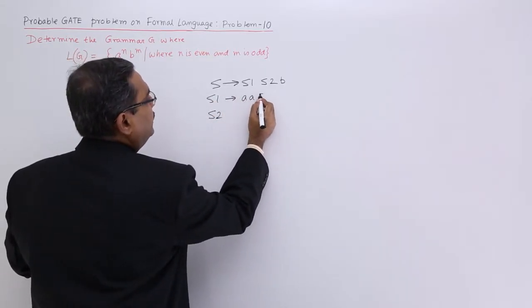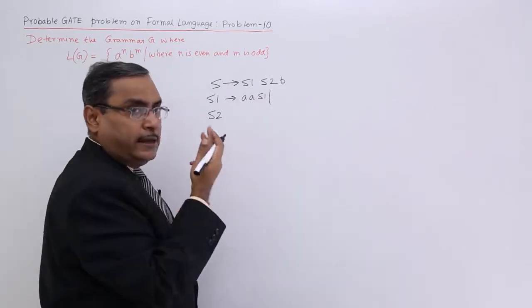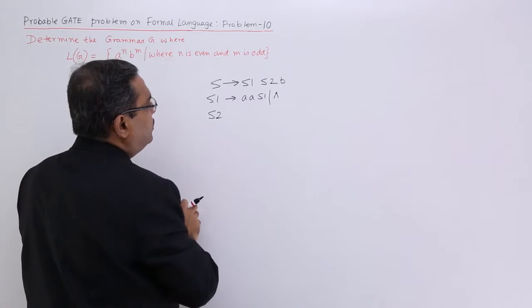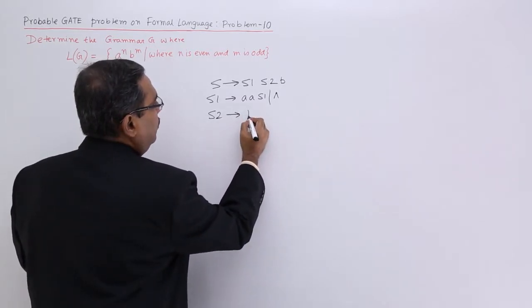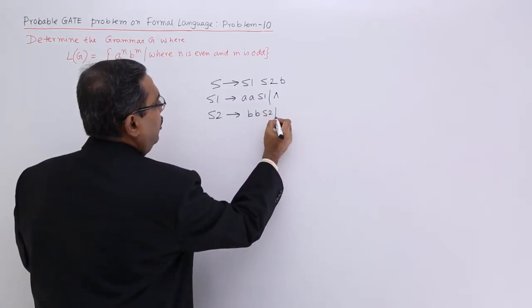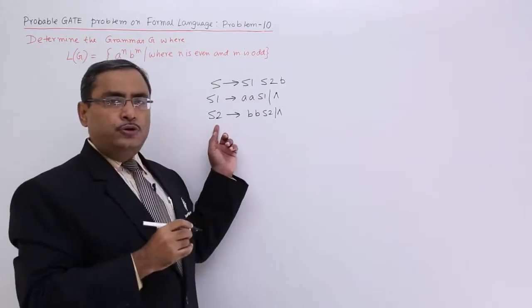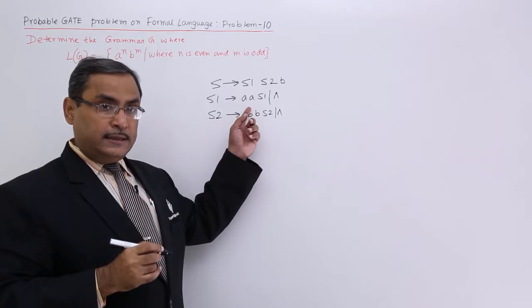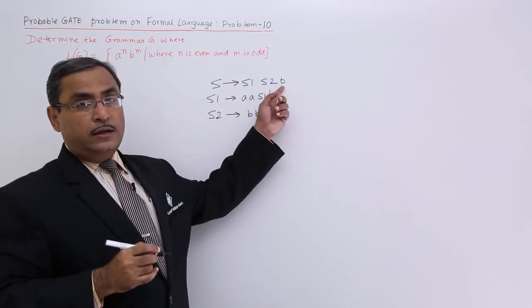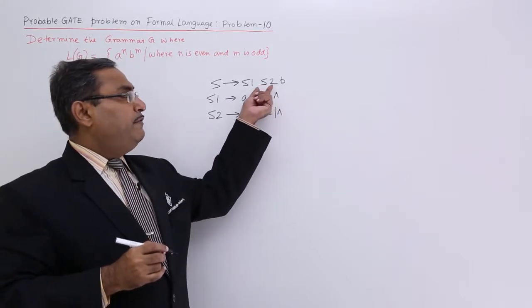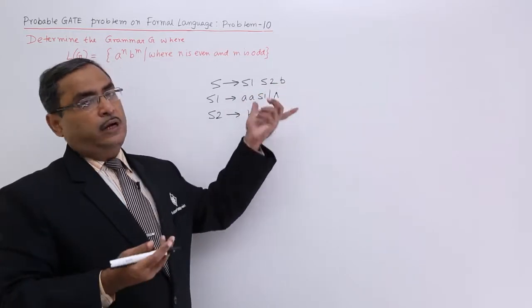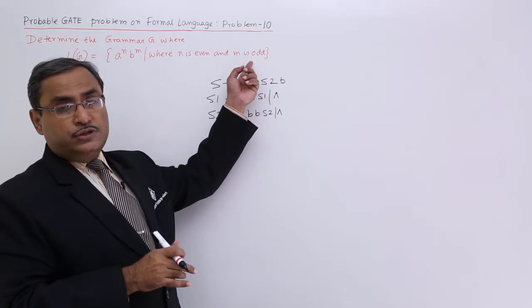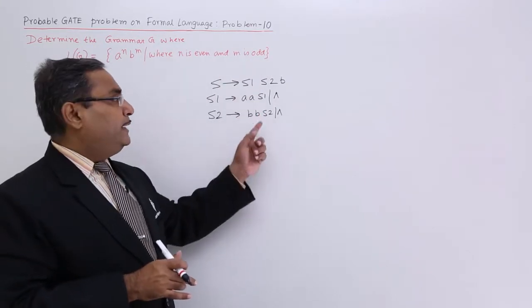S1 will be producing always 2 times a or kappa, and S2 can produce always 2 times b or kappa. So S2 will produce always even number of b's. S1 will produce always even number of a's. But 1 b is here extra. So if you go on concatenating even number of b's and 1 b, ultimately we are going to get odd number of b's and that constraint is getting satisfied. That is my production rule.